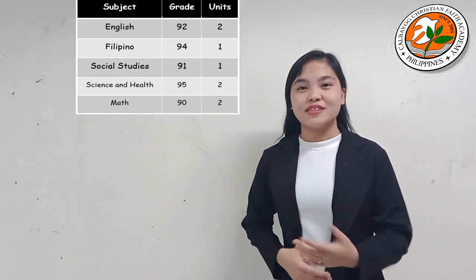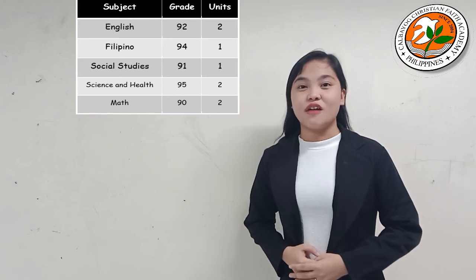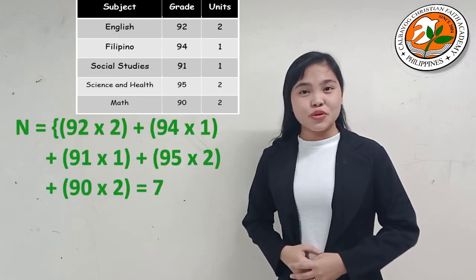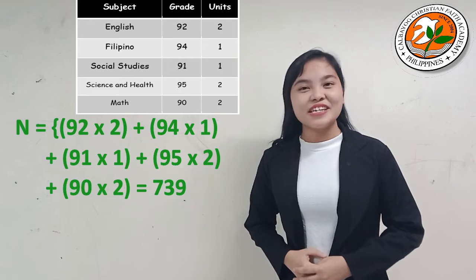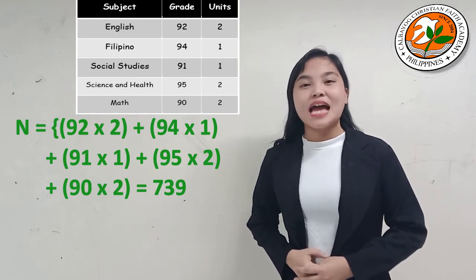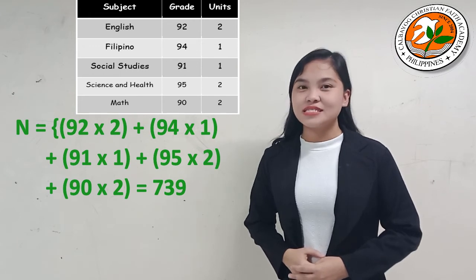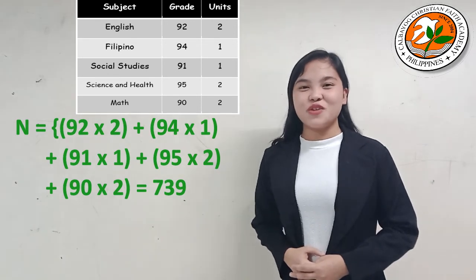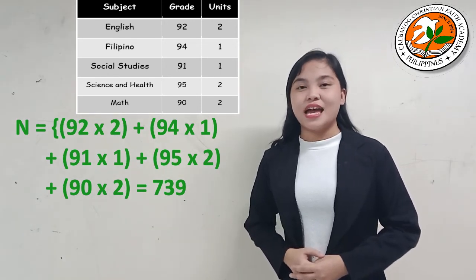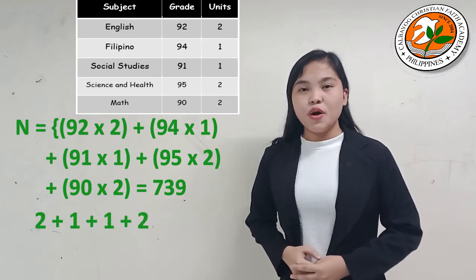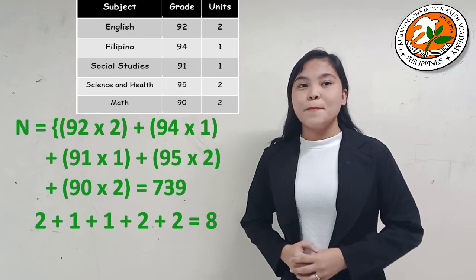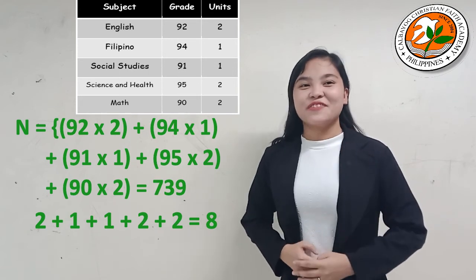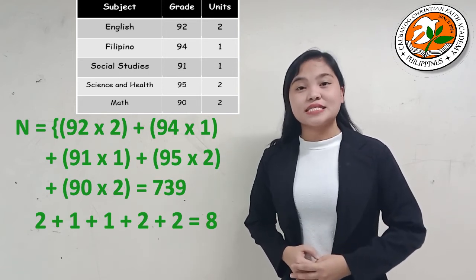First, let's multiply each grade by the corresponding number of units. Let N be the weighted average. N = (92×2) + (94×1) + (91×1) + (95×2) + (90×2) = 739. Second, add all the units: 2+1+1+1+2+2 = 8. Third, divide the sum of the products by the sum of the weights: 739 divided by 8.